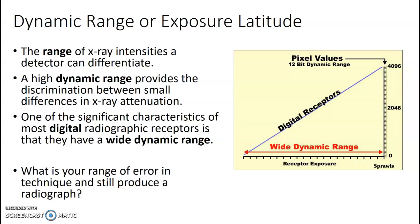Dynamic range, or exposure latitude — the range of x-ray intensities a detector can differentiate. A high dynamic range provides discrimination between small differences in x-ray attenuation. Digital imaging provides a wide dynamic range, meaning your range of error is wider. Even if your technique is off, the computer will still try to fix it and get you an image — much easier than with film.